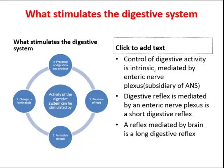Most digestive activity consists of a contraction of smooth muscles in the walls of digestive organs, the secretion of juices into the alimentary canal lumen, or the secretion of hormones into the plasma. Much of the control of digestive activity is intrinsic to the digestive organ and mediated by enteric nerve plexus, which are a subsidiary of the autonomic nervous system. A digestive reflex mediated by an enteric nerve plexus is a short digestive reflex, while a reflex mediated by the brain is a long digestive reflex.